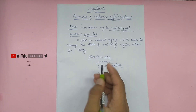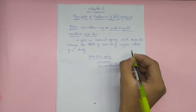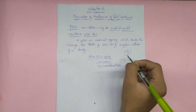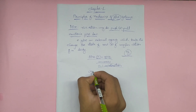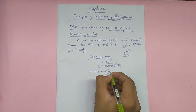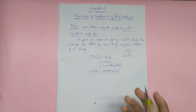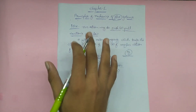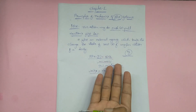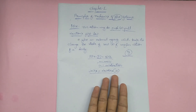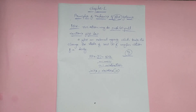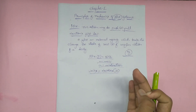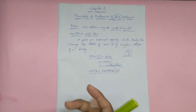Mass multiplied by acceleration gives us force. In the SI unit system, force is measured in Newtons. So the unit of force is Newtons. Force formula is F = m × a (mass into acceleration), and the unit is Newtons. Force is also a vector quantity.